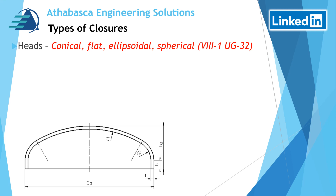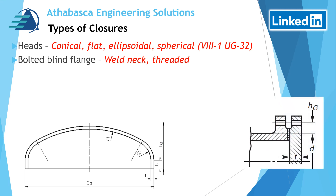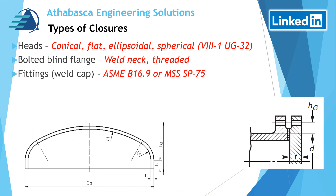If you check out our library, we have some great design videos for heads that you might find useful. The next category is bolted blind flanges, the most common being a weld neck — borrowed from Section Eight, Division One, as a diagram showing a typical weld neck. Next is a cap, which we reference in ASME B16.9 and MSS SP75.